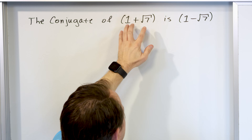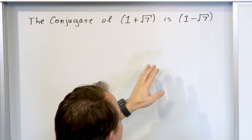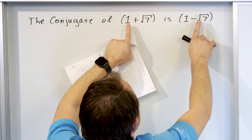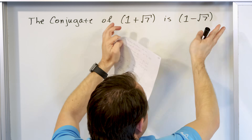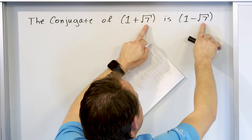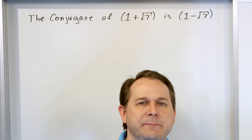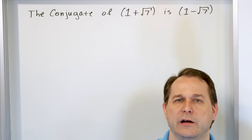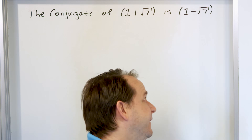What we figured out is that if we take this term and multiply it by this term, with all the cross multiplication, the interior terms — square root of seven and negative square root of seven — add to zero, and when you multiply the last terms, the square root of seven squared kills the radical. So by multiplying by the conjugate we eliminate the radical, and we use the conjugate to get rid of any radicals in the denominator of fractions.